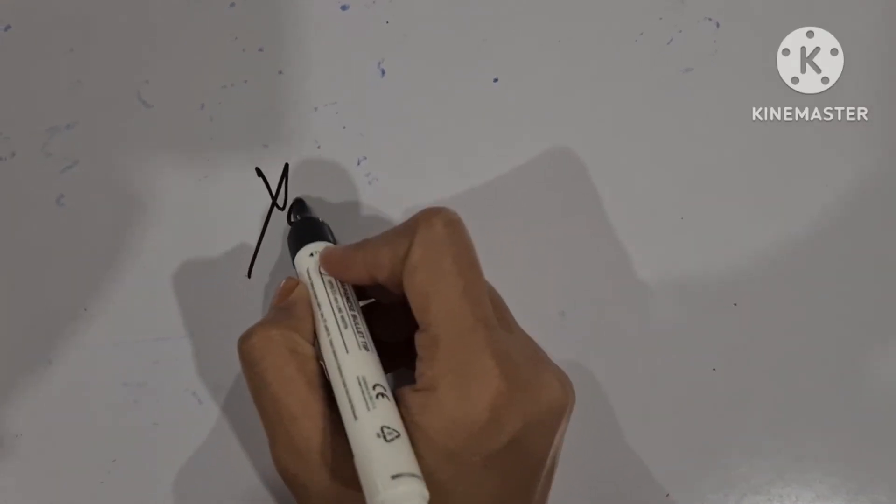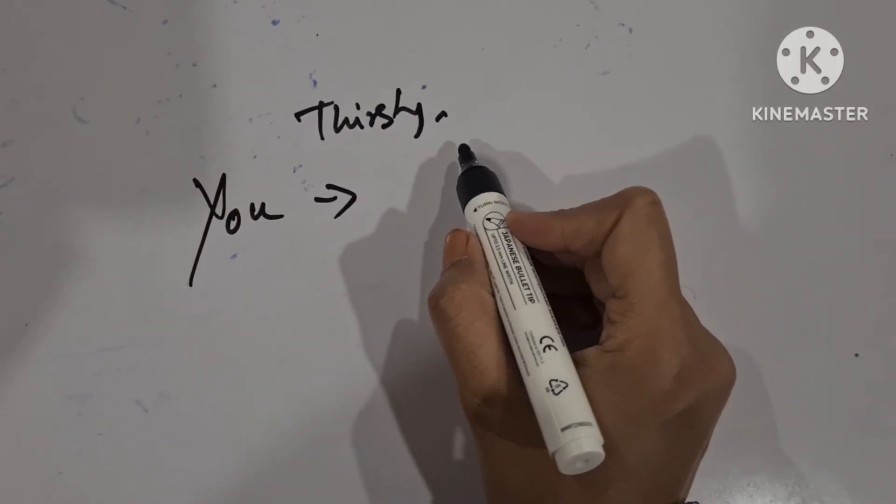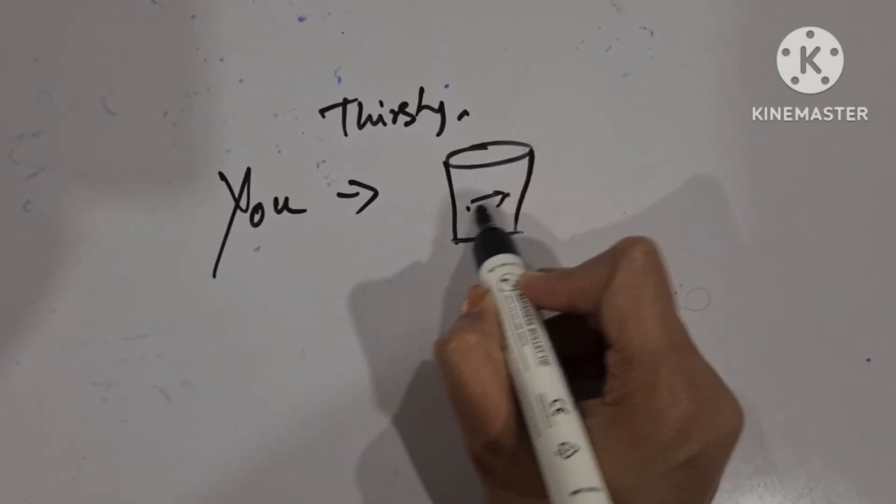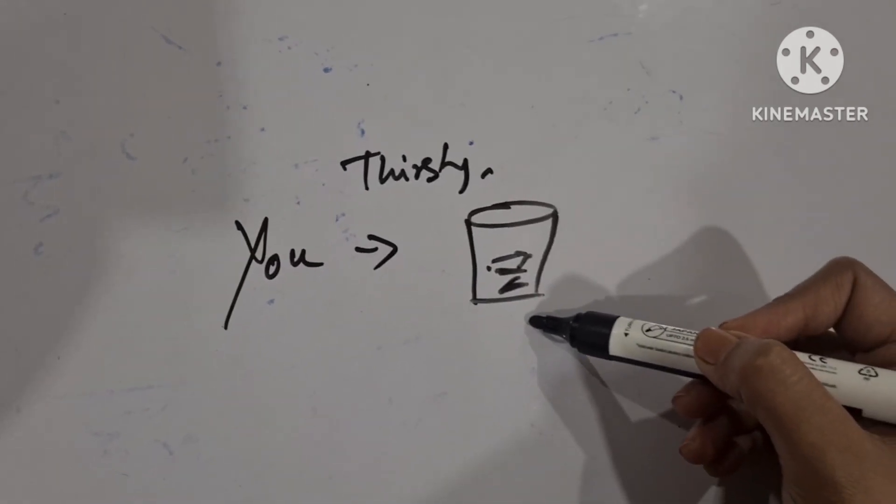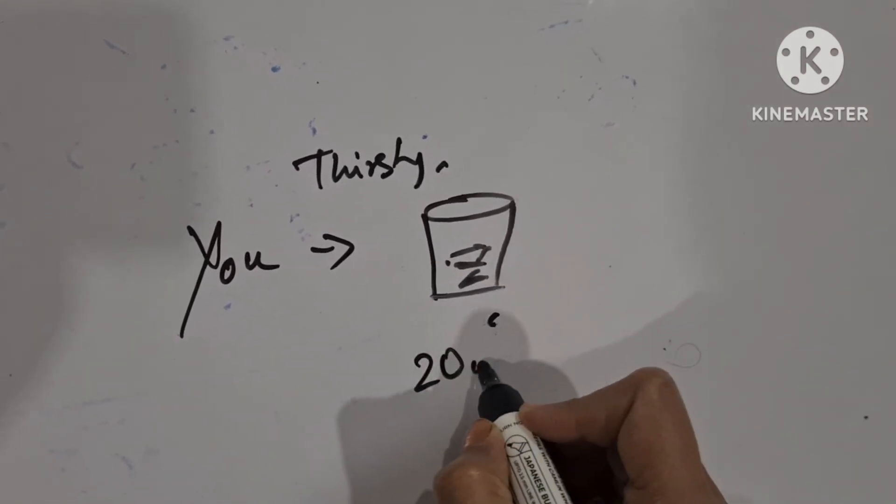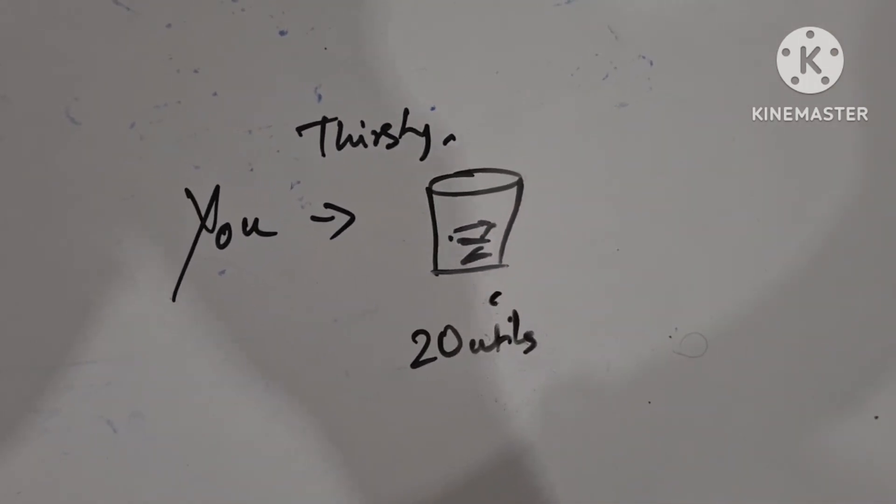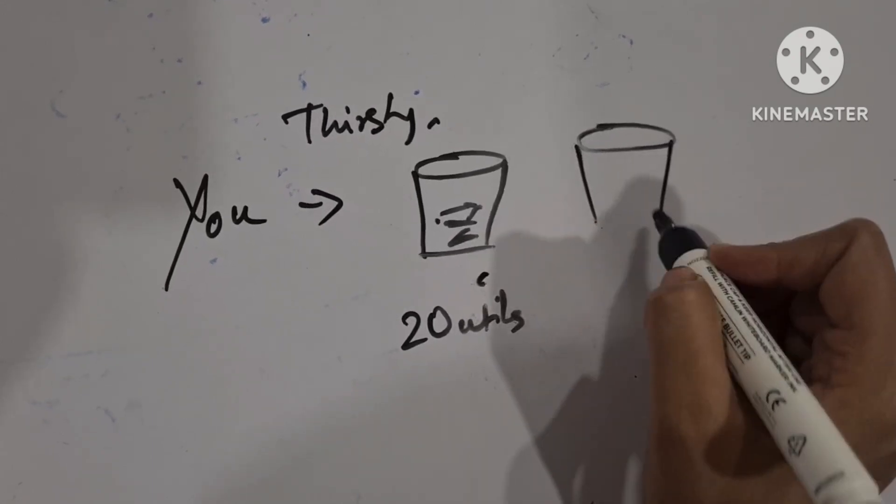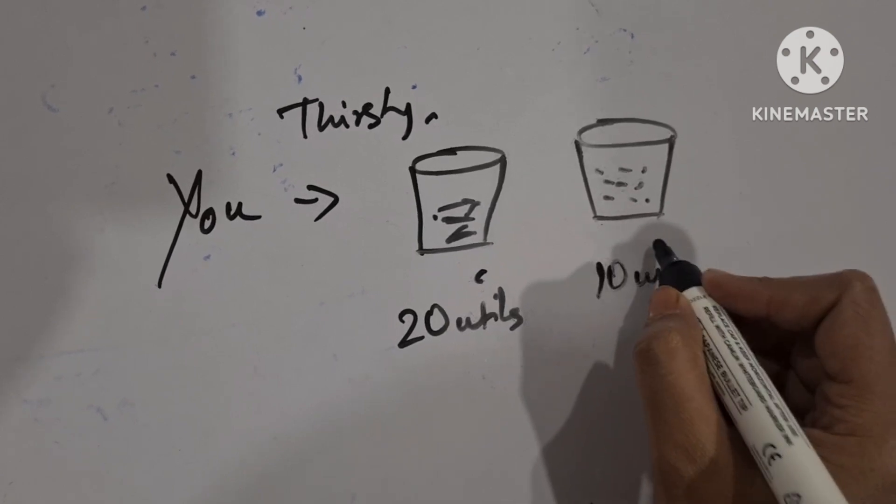Now suppose this is you. You are very thirsty. First you drank one glass of water. Now you are very thirsty. You drank one glass of water. So for example, you get 20 utils. You got satisfaction of 20 utils. Now, you drank one more glass of water. You took one more glass of water. You got 10 utils.